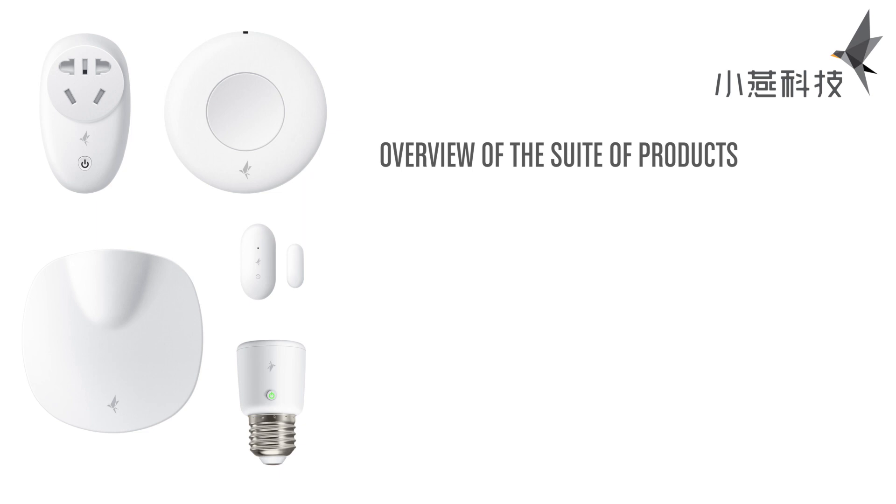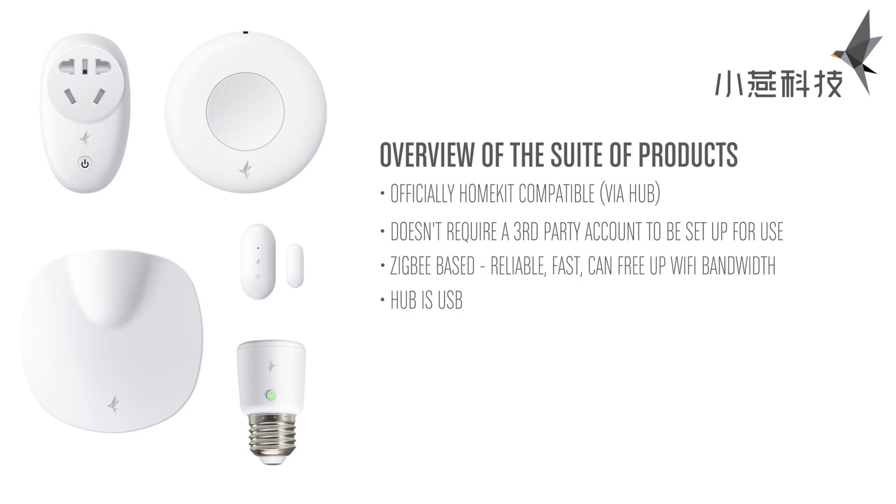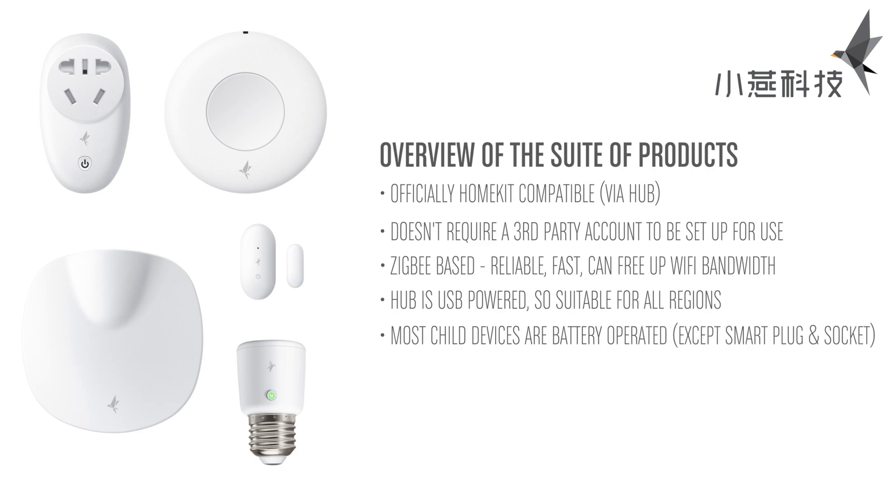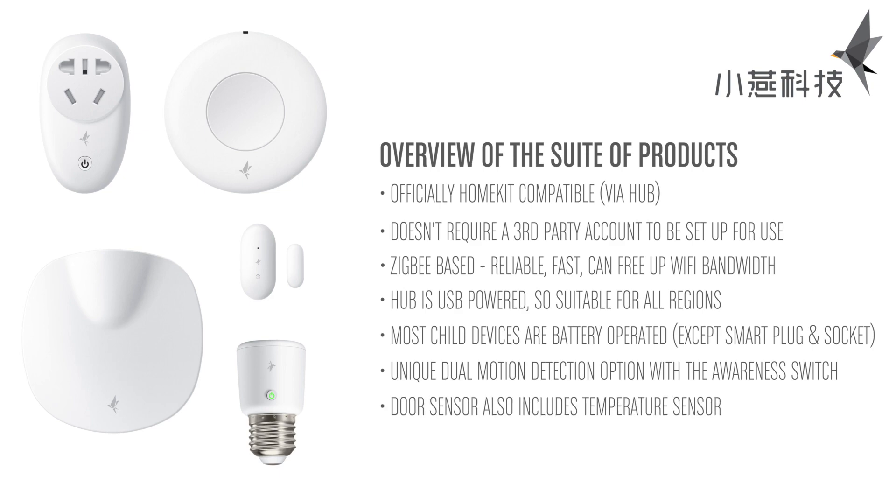Wrapping up this overview of the suite of products: first, it's HomeKit compatible via the hub. Second, you don't need to sign up for any third-party account like you would with Akara. It's Zigbee based, so it's very fast. The power supply for the hub itself is USB, so that's not an issue for many regions. Most of the devices apart from the socket are battery powered, so once again no issue with regions. It's got a dual motion sensor in the awareness switch, which could provide some unique use cases, and finally the door and window sensor also contains a temperature sensor. So armed with all those positive points, it really is down to the individual as to whether they think this is going to be a nice addition to their HomeKit home, but for me, the awareness switch alone provides something pretty unique.